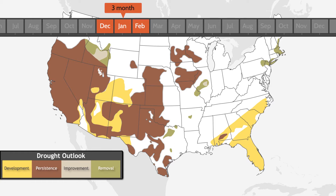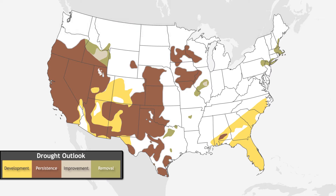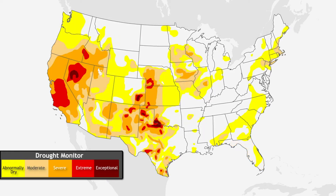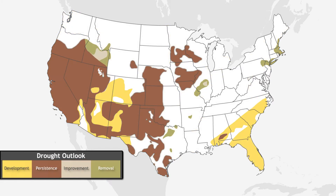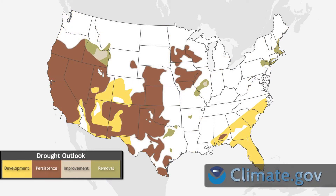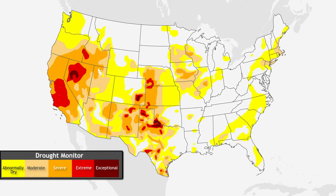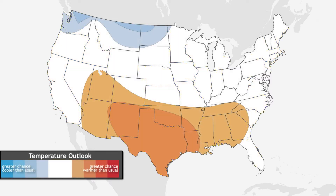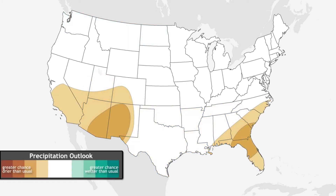The outlook builds on the United States Drought Monitor, which evaluates current conditions. The drought outlook focuses on the future, starting with drought areas from the most recent drought monitor map. To look ahead, scientists around the country evaluate the current one- and three-month temperature and precipitation outlooks to consider how drought might evolve.